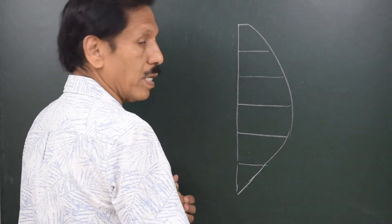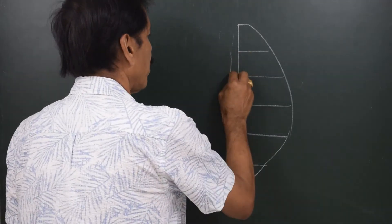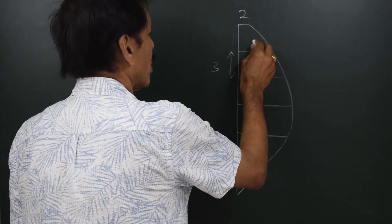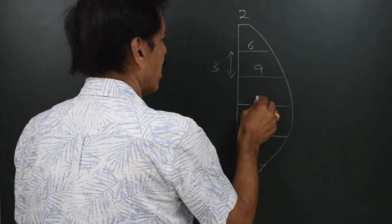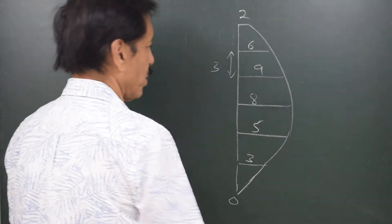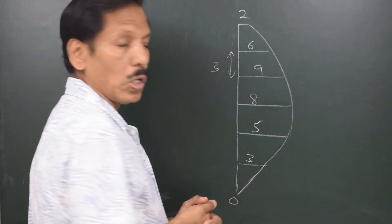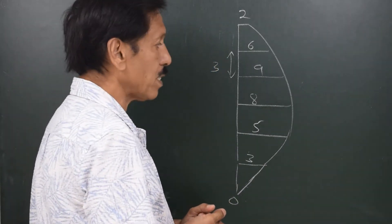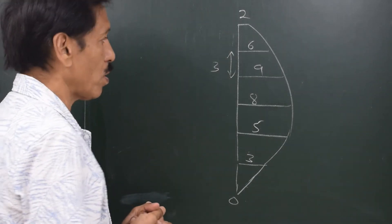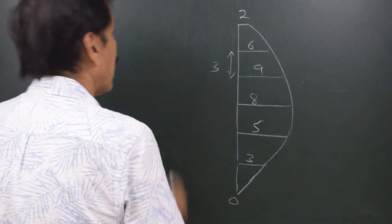Now, the half-breadths of the waterplane from aft to forward at a uniform interval of 3 meters are: 1, 2, 6, 9, 8, 5, 3, and 0. We have to find out the waterplane area and also the LCF. When half-breadths are given for a waterplane area, we should always list them from aft to forward — that helps us get the LCF directly.